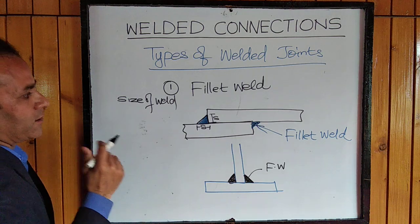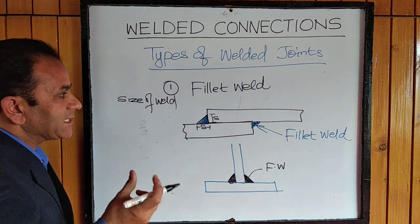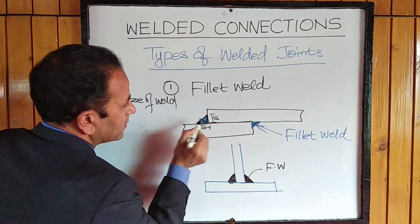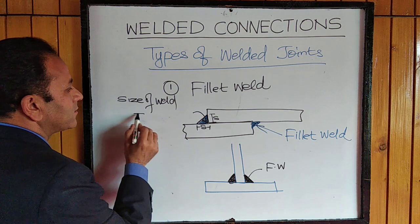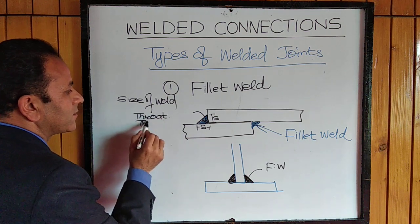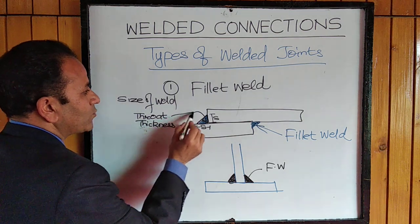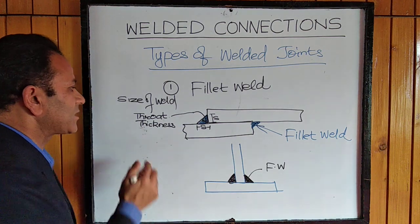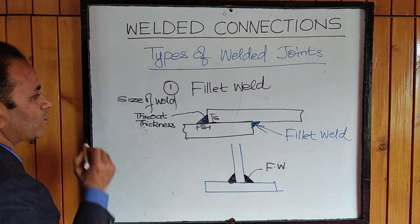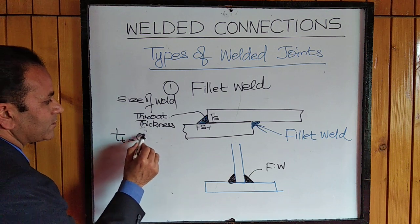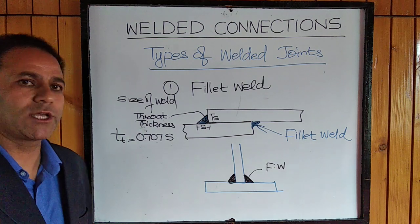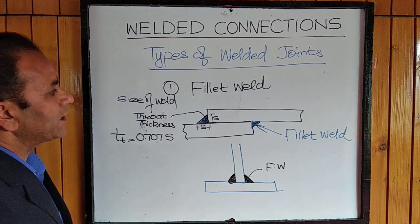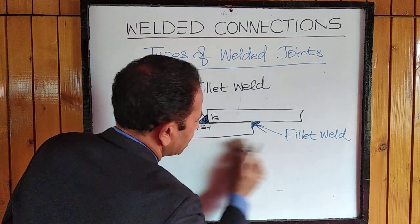For evaluating the strength of the fillet weld, we need the average thickness called the throat thickness. We don't take the size itself; we take the average thickness of the weld, which is called throat thickness. Technically, throat thickness is used to calculate the strength of that particular joint. The throat thickness for a fillet weld is 0.707 times the size of weld.